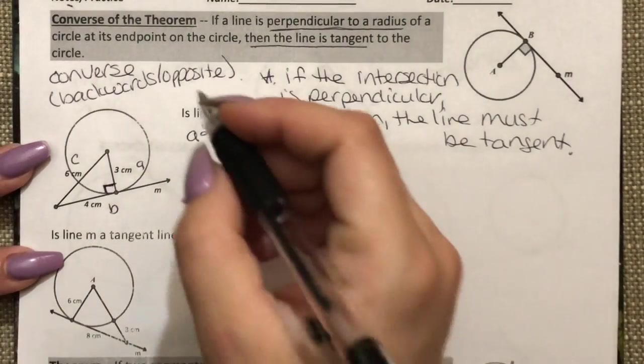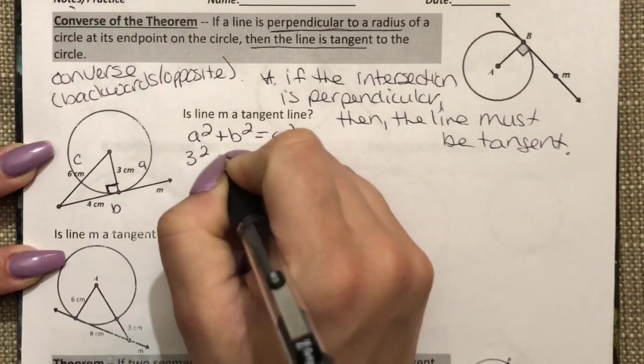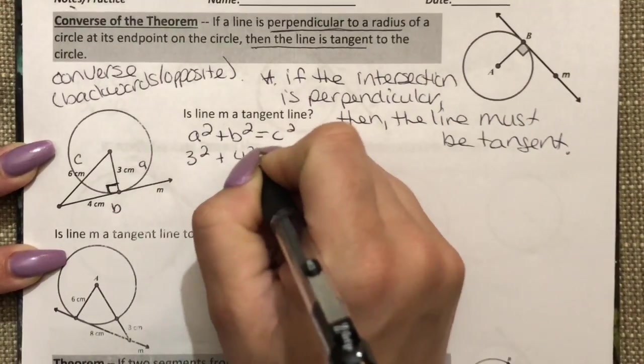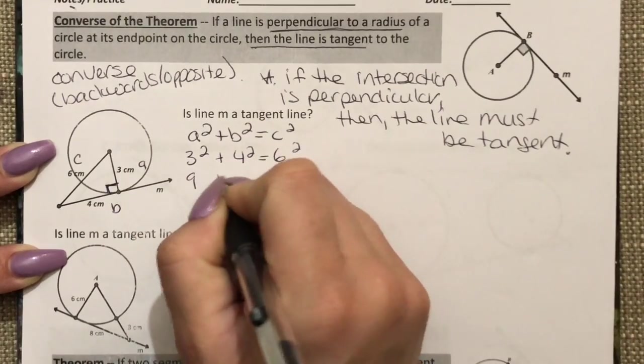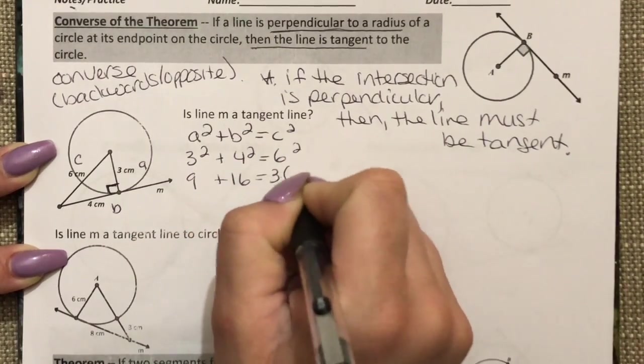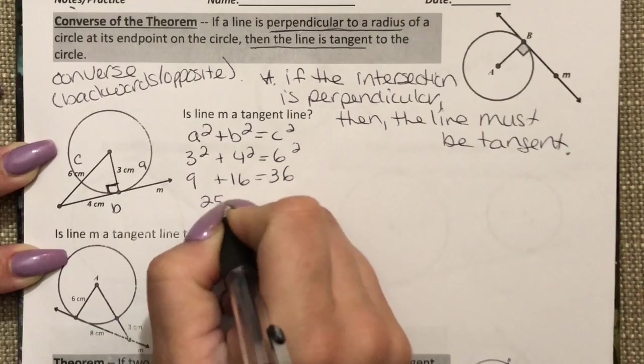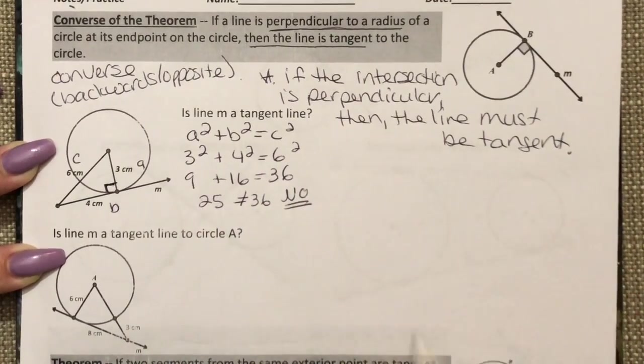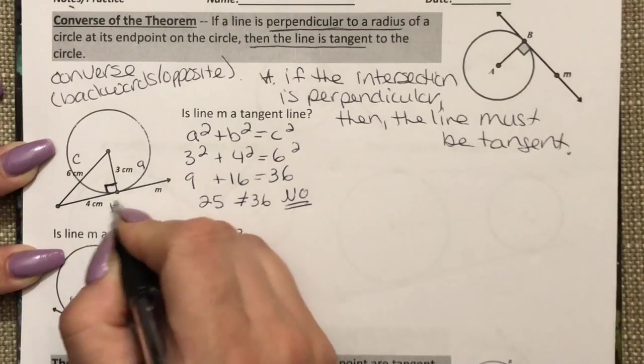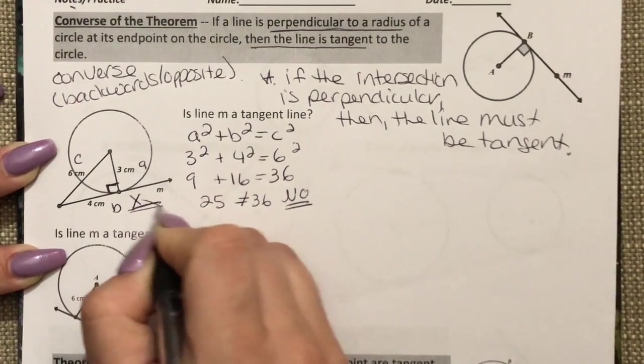So here I'm going to have 3 squared plus 4 squared equals 6 squared. 9 plus 16 equals 36. 25 does not equal 36, so this cannot be true. This line right here is not tangent.